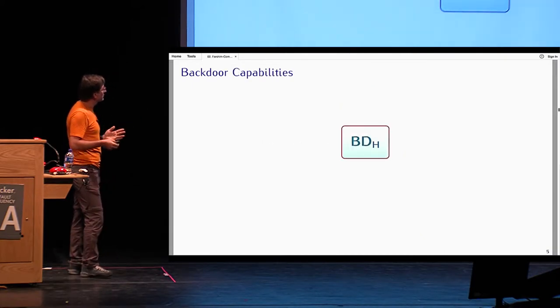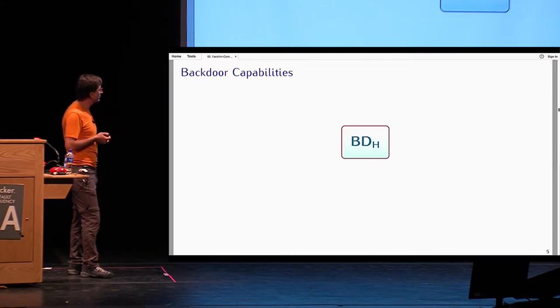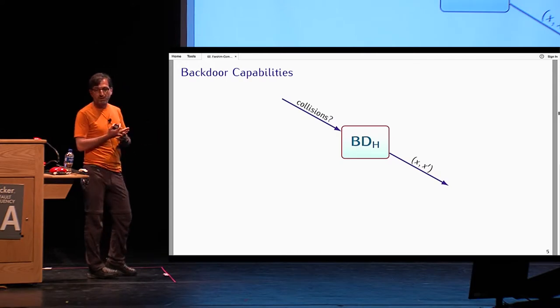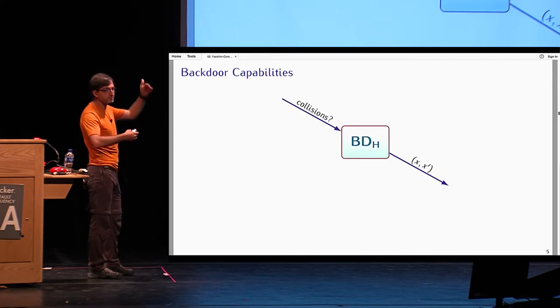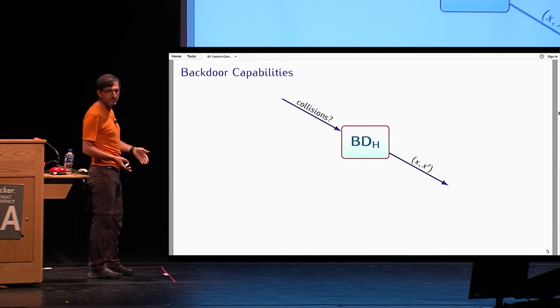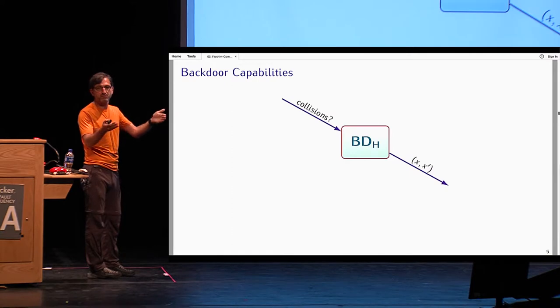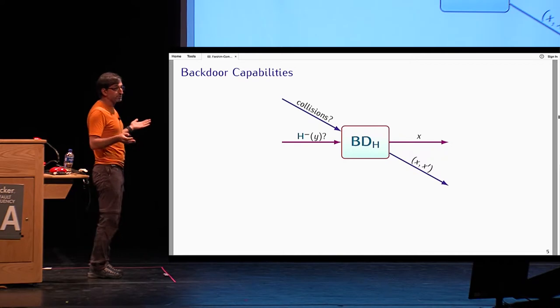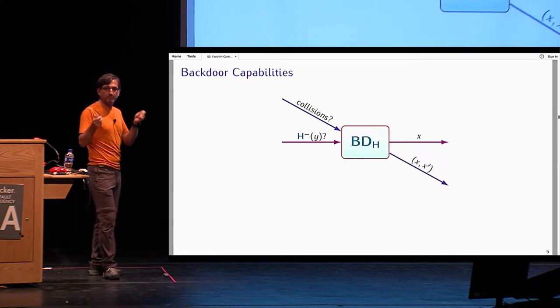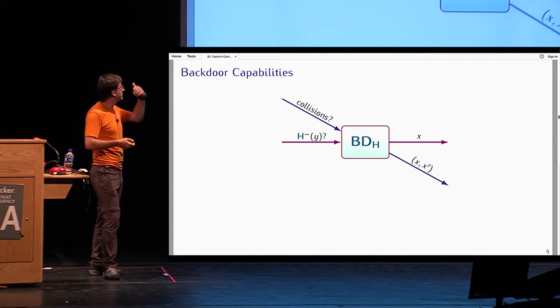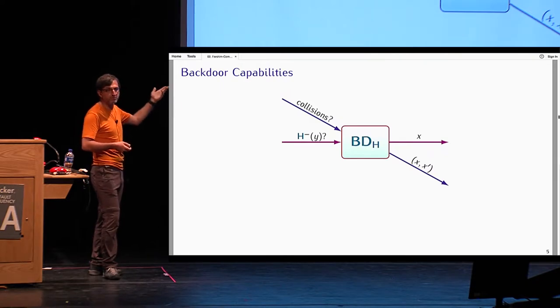Let's look at some examples of what we can do with this backdoor oracle. We can compute collisions. I can just put a function which searches through the table of the random oracle and outputs two collisions for me. If the random oracle is compressing, there will be collisions. I can also do inversions. Suppose I have a point y that I want to invert. I will just hard-code it to my function f, and then the function f will look through the table of the random oracle and compute a preimage for that y.